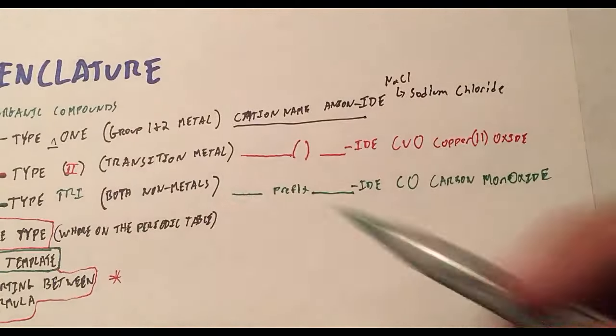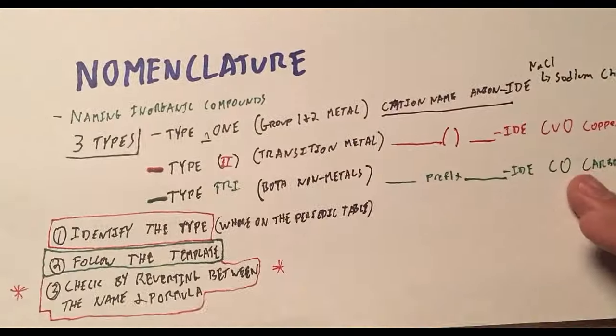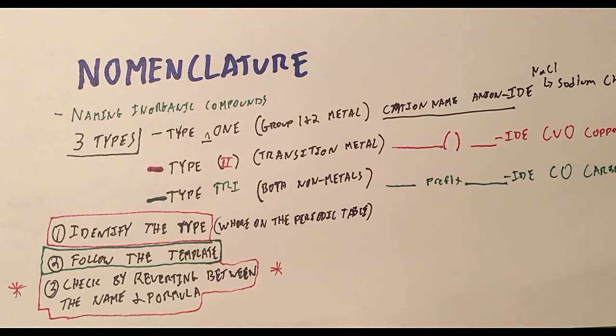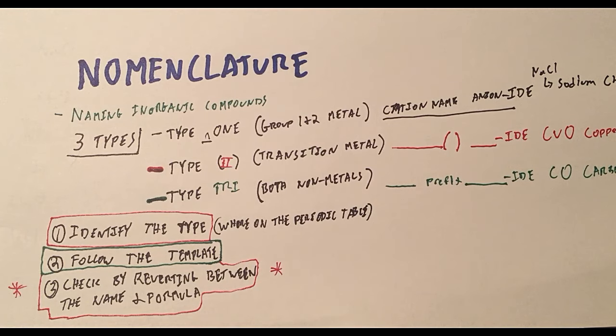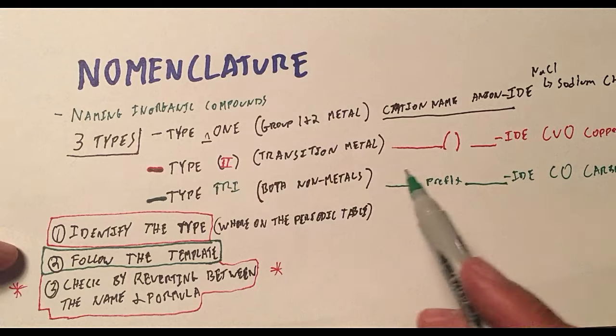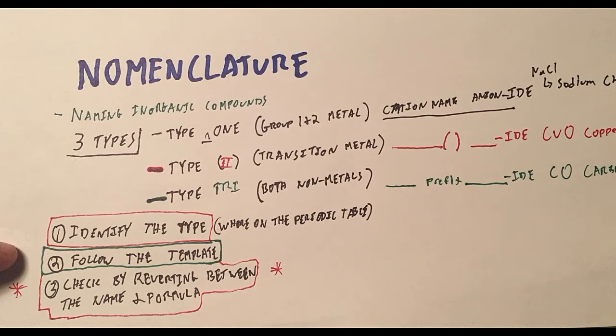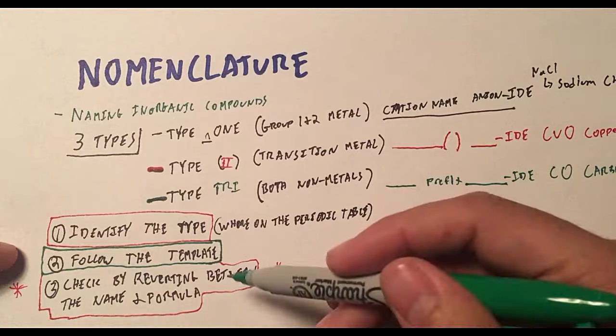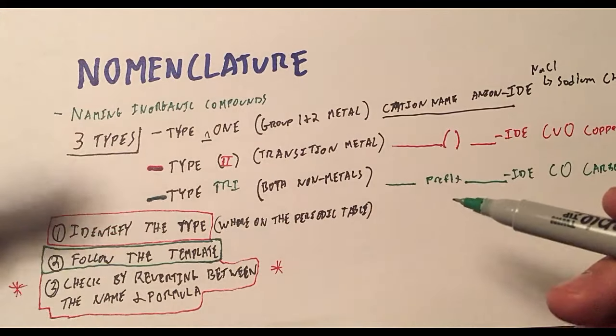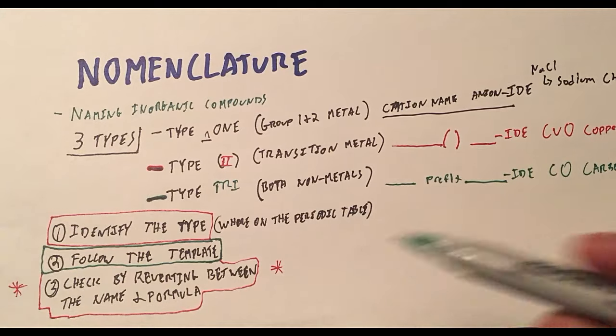Let's go ahead and just summarize this right here. The first thing you're going to do is identify the type you're dealing with. It's not that important that you know that copper oxide is Type 2 naming. What I mean by that is just understand am I going to use Roman numerals or not? Am I going to use prefixes or not? Follow the template and that's using the space and the -ide ending and how that's going to work out for you. And then go back and forth between the name and the formula. If you can get the name from the formula, you're good, or you can get the formula from the name. All right, let's go ahead and do a couple of examples.